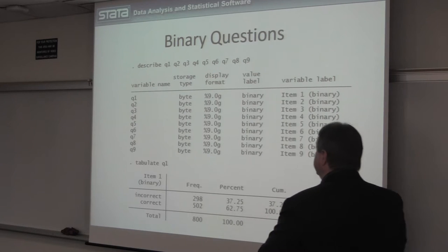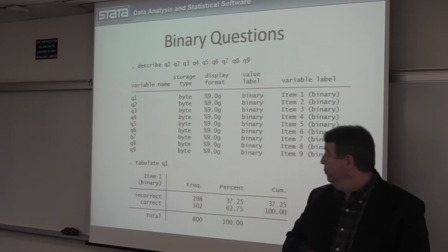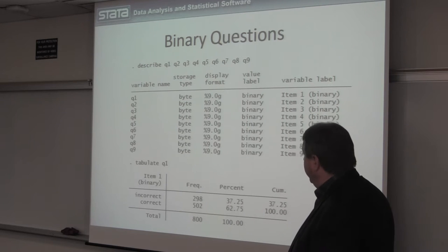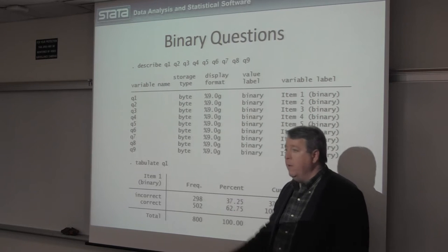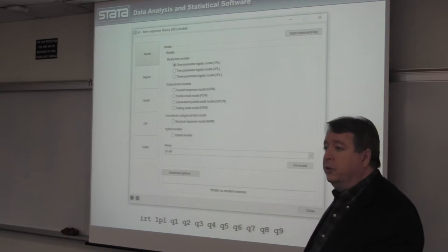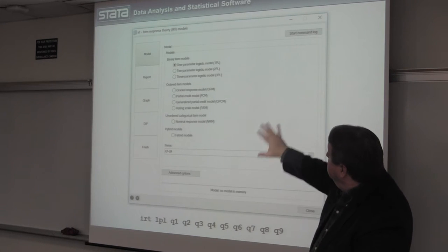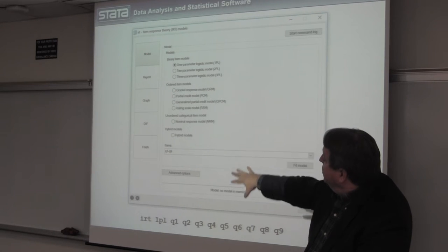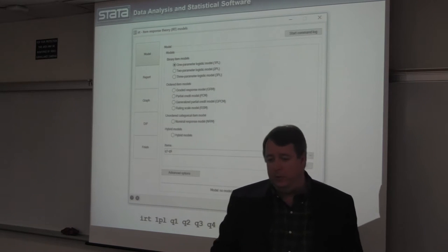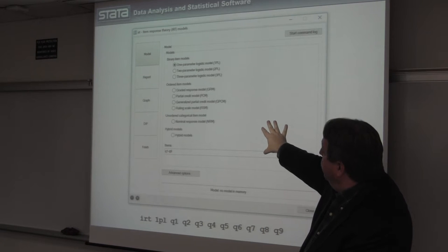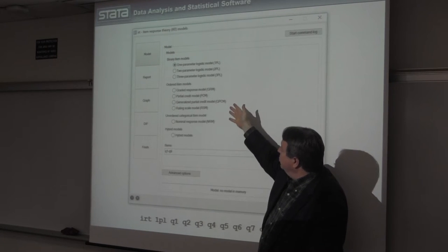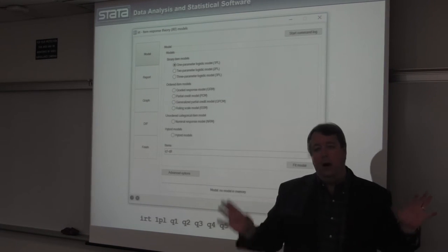As an example, this is a dataset from a paper by DeBoeck and Wilson — real data with 800 observations. We have nine items numbered Q1 through Q9. Out of 800 respondents, 298 answered question one incorrectly and 502 answered it correctly. So we fit an item response model for this collection of items. In Stata 14, we put together a nice graphical user interface for this. On the model tab, we can select binary models: one-parameter logistic, two-parameter logistic, and others. We can also fit models for ordered outcomes, partial credit models, categorical outcomes, or even hybrid models combining each of these.